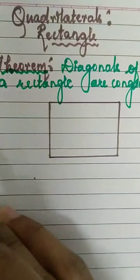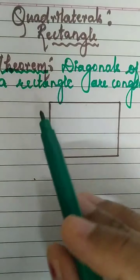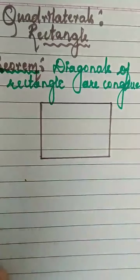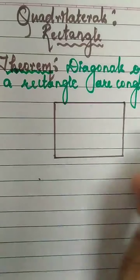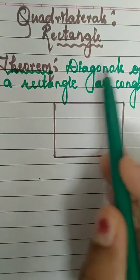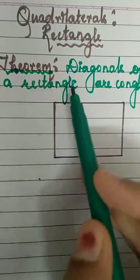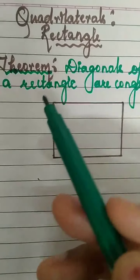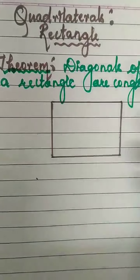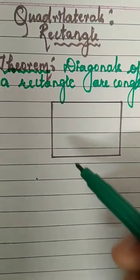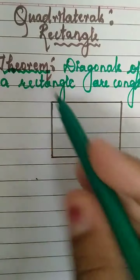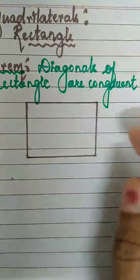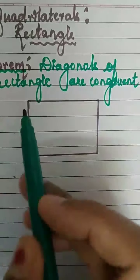The first theorem is: diagonals of a rectangle are congruent. This you have learnt in the previous class. Today, you are going to prove this statement — diagonals of a rectangle are congruent.